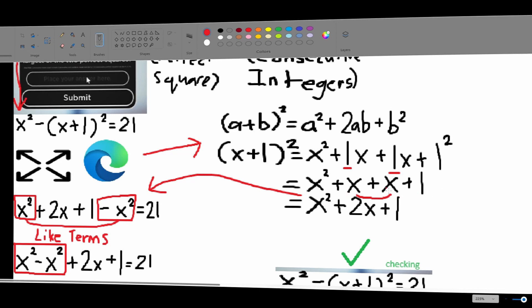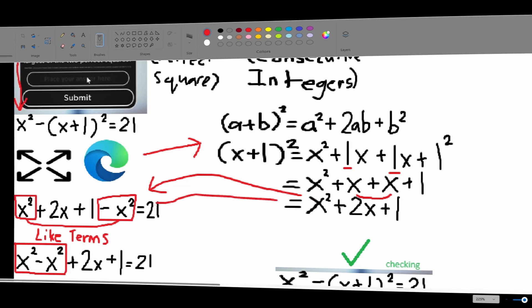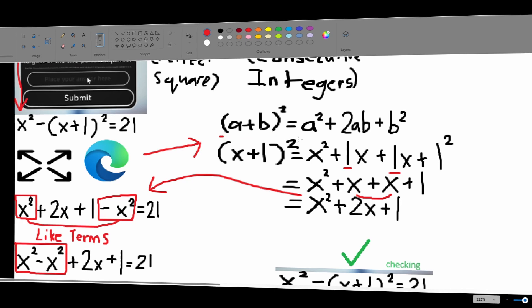And when you times 1 by itself, it's still 1. So, this is our equation down here: x squared plus x plus x plus 1. These are like terms, so we can combine them. And now we end up with x squared plus 2x plus 1.